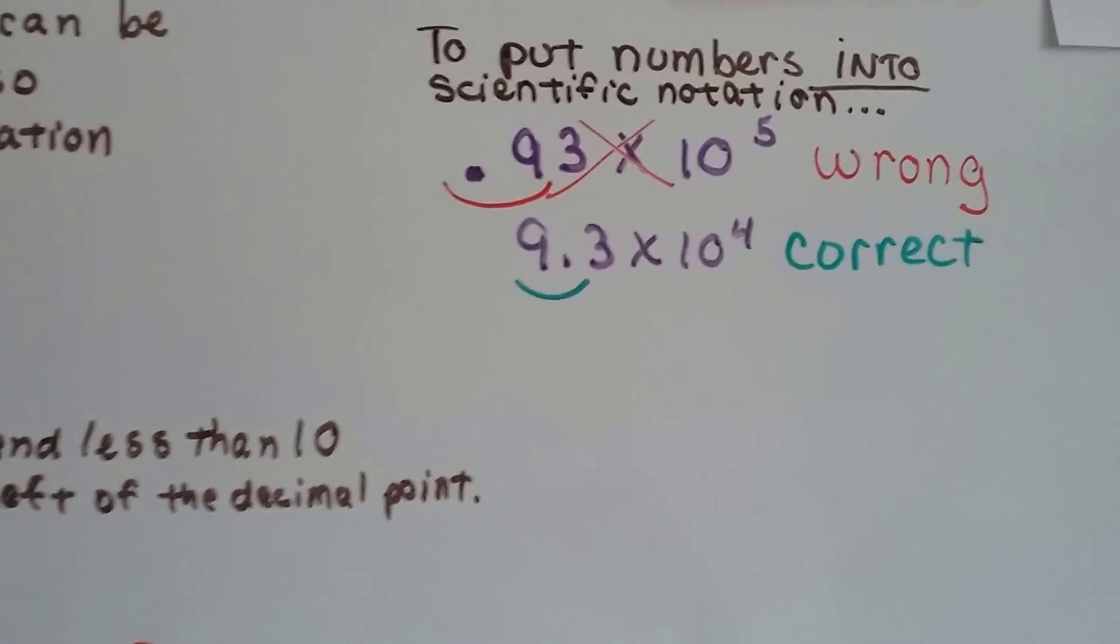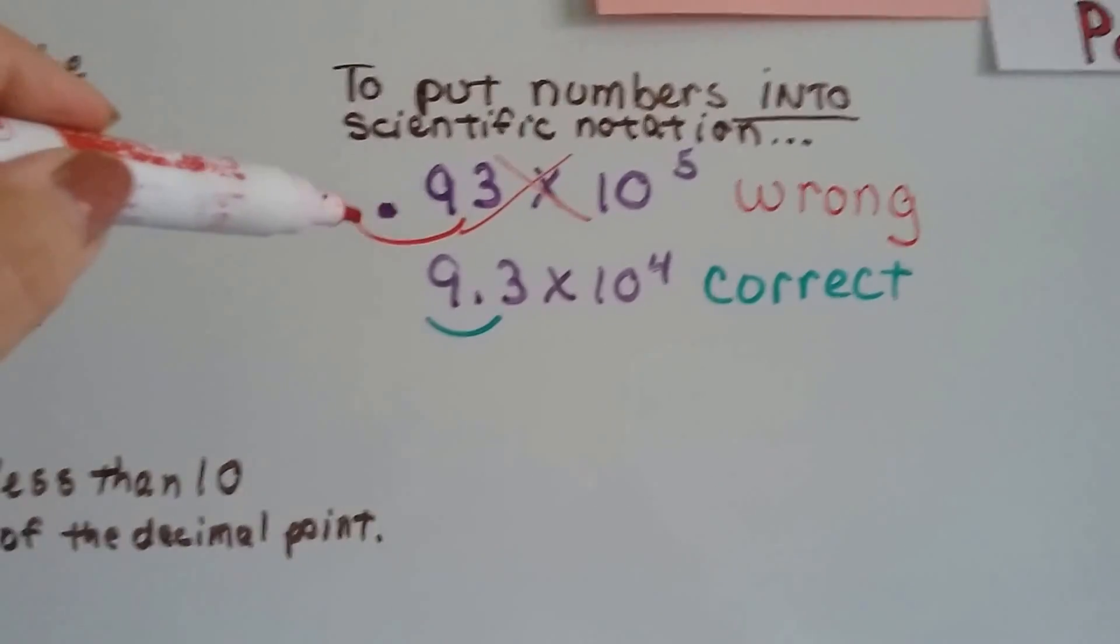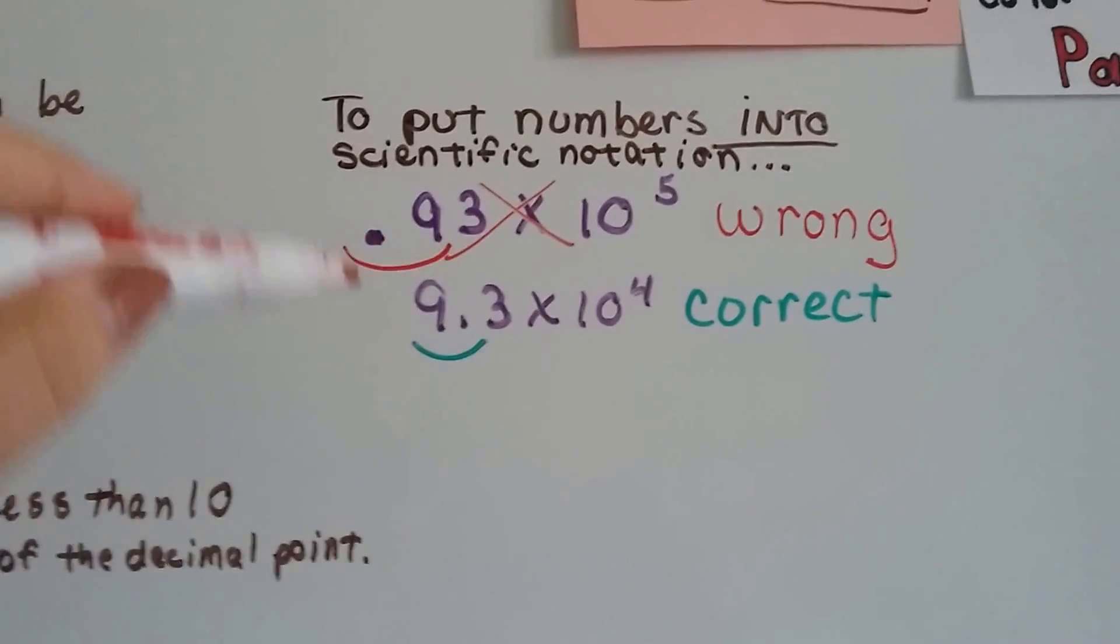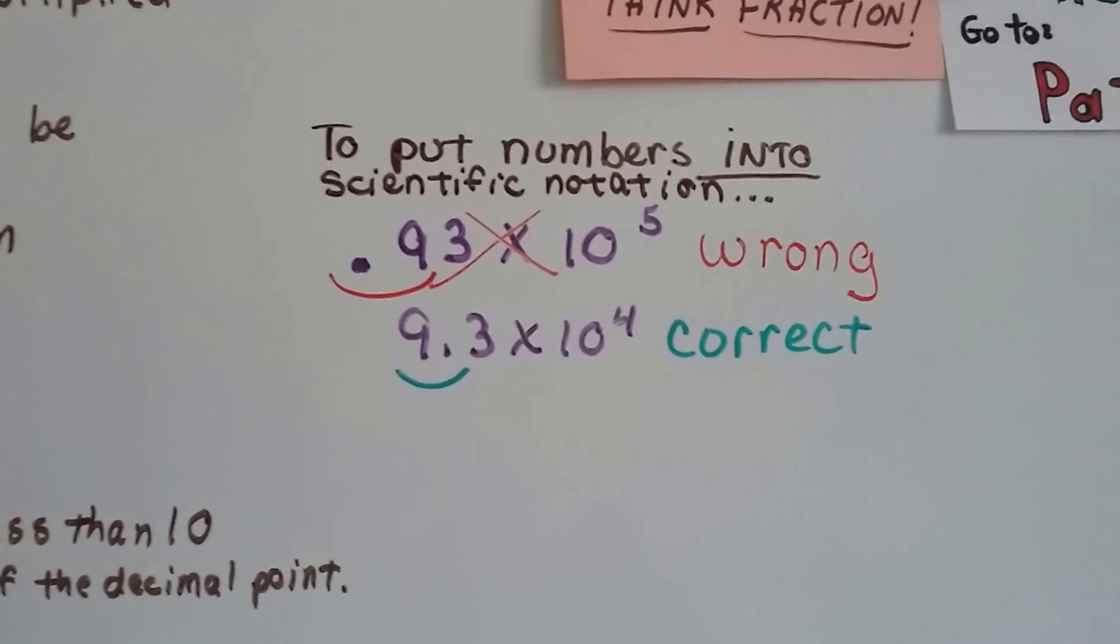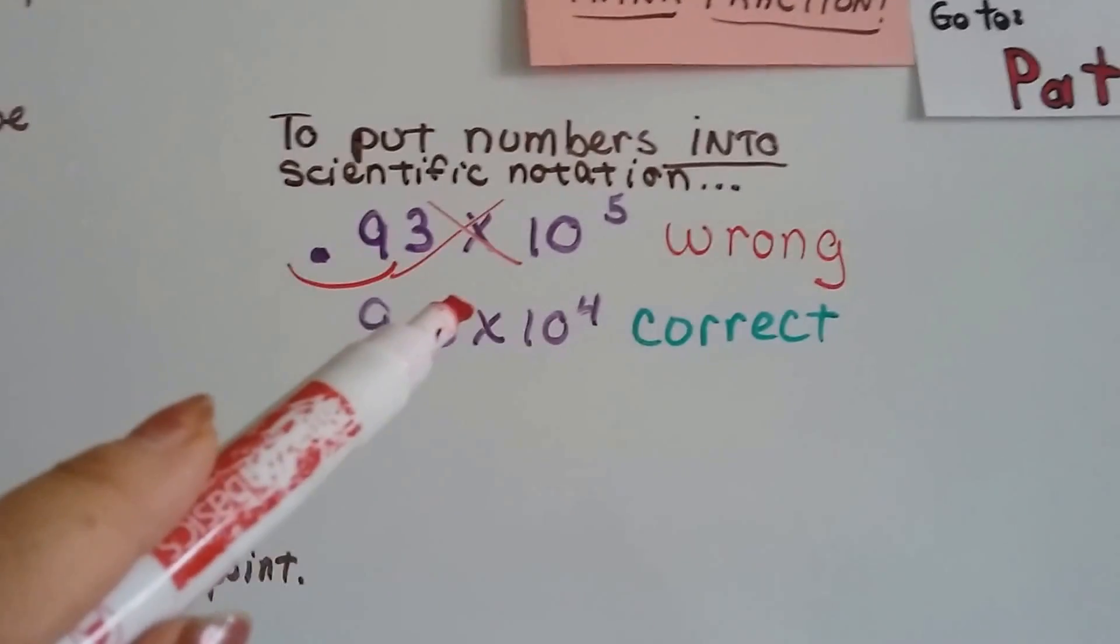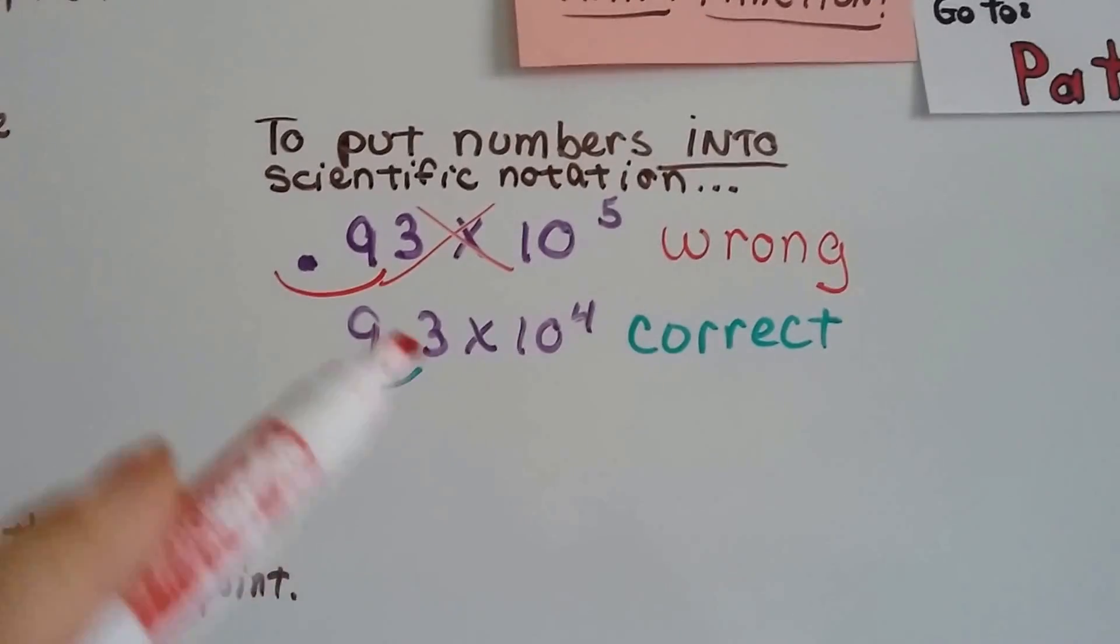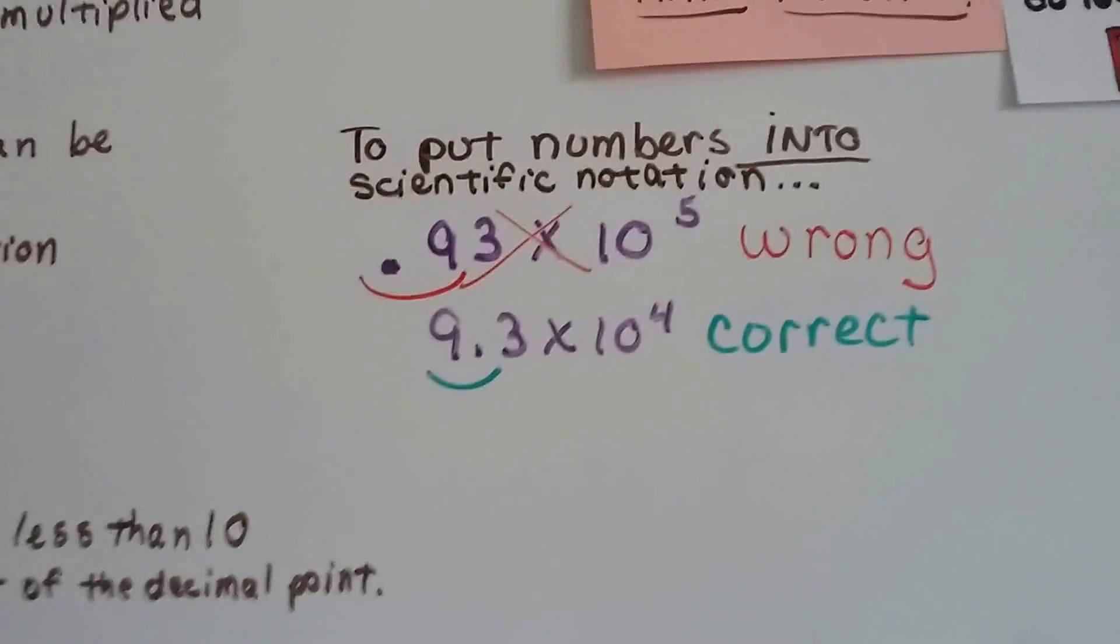So when we put numbers into scientific notation, you don't want to do it so that the decimal point is in the very front. You want at least one digit in front of that decimal point. Now that's going to change as we add and subtract them, but then we need to put them back to the correct way when we're finished working with them.